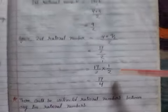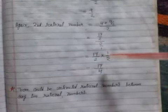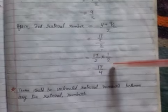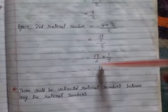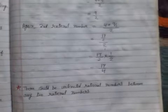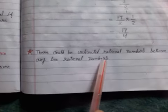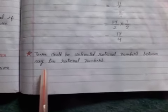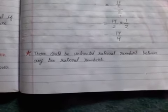We can write 2 as 2 by 1. When dividing fractions, we take the reciprocal and multiply. So 1 by 2 times 17 by 2 equals 17 by 4. One point to be noted: there could be unlimited rational numbers between any two rational numbers.